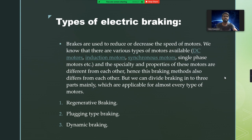The types of electric braking: electric braking is divided into three types — those are regenerative braking, plugging, and dynamic braking. We know that there are various types of motors available: DC motors, induction motors, synchronous motors, and all. Brakes are used to reduce and decrease the speed of the motors. The properties of these motors are different from each other, hence this braking method is also different for each of the motors. We will divide braking into three parts: regenerative braking, plugging, and dynamic braking. We will see each one by one.